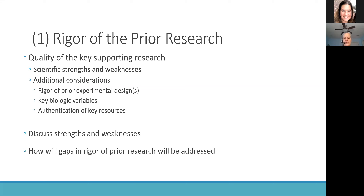Where applicable, the applicant should also describe specific reasons why prior research failed to meet rigor criteria — for example, due to experimental design, issues with key biologic variables, or poor authentication of key biologic resources or chemicals. So it's not just describing what the prior science showed; you're also potentially addressing other things that they consider aspects of rigor.